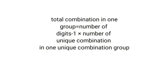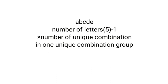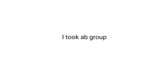The next question is: how do we find the total number of combinations in one group? The equation is: number of digits minus one, multiplied by the number of unique combinations in one unique combination group. It may sound complex, but with examples it becomes easy. Taking ABCDE with 5 letters, we do 5 minus 1. Then we need to find the number of unique combinations in one unique combination group — we can pick any group, such as the AB group.